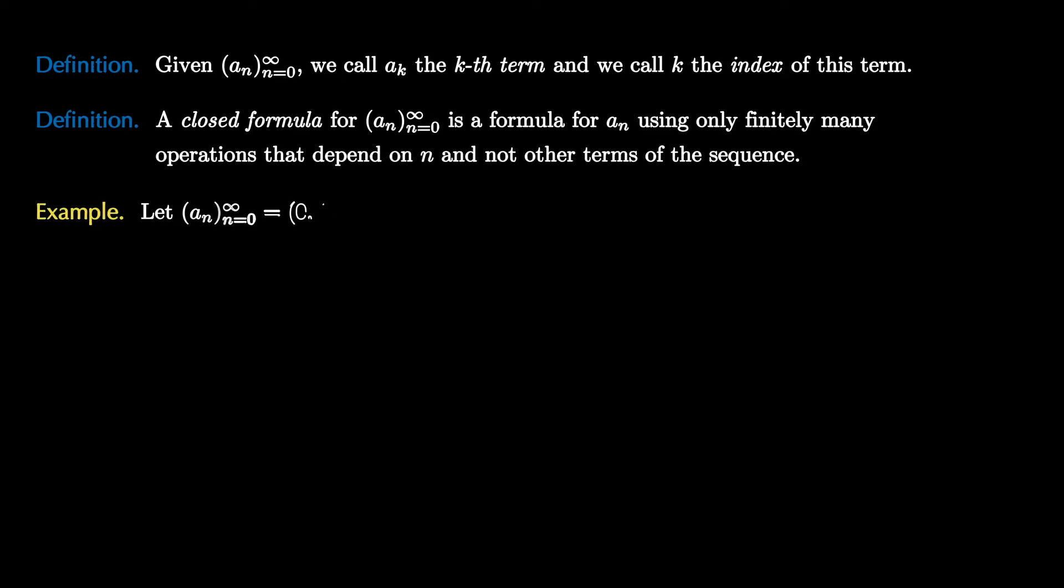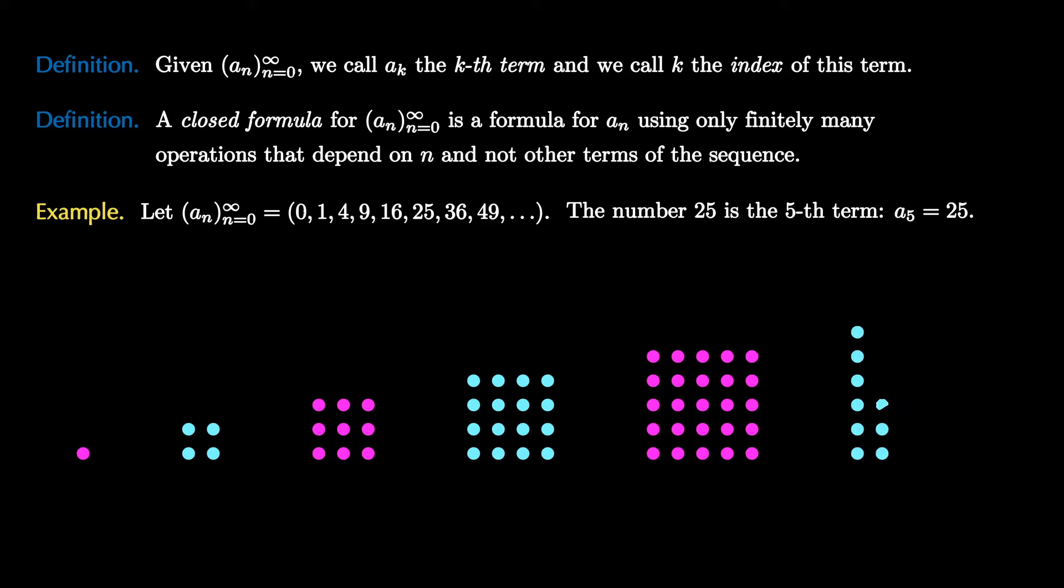Let's see an example. Suppose the sequence aₙ is given by the numbers 0, 1, 4, 9, 16, 25, 36, and so on. In this case, the number 25 is the fifth term, so a₅ equals 25. One way to make sense of this sequence is to recognize that it's counting the number of dots in these arrays.